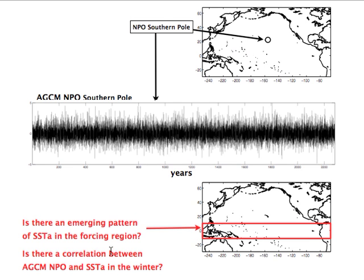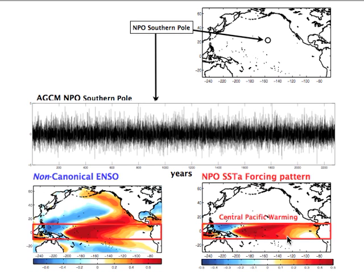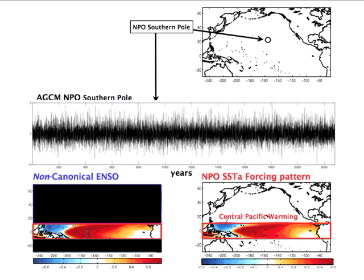We ask: is there an emerging pattern of SST variability in the tropics correlated with the NPO southern pole index during winter? We take this long time series and correlate it with the SST used to force the run. The resulting pattern — the NPO SSTA forcing pattern — shows correlations almost 0.5 in winter. Comparing this with the non-canonical ENSO expression, these two patterns are essentially identical, suggesting that the non-canonical ENSO excites an important fraction of variability in the NPO southern pole.